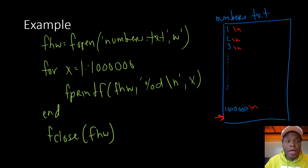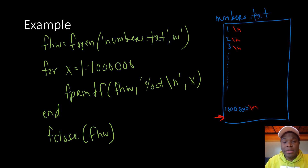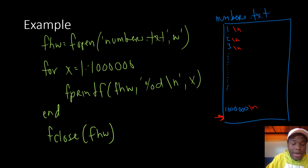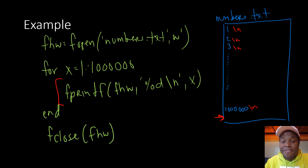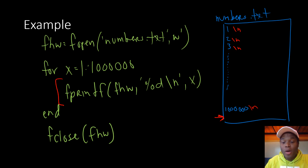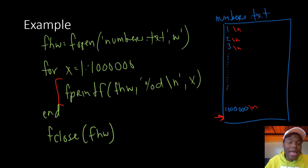A lot of times that extra blank line might not be a problem, but what if we only want exactly a million lines? All previous lines should have \n except the last one. We can handle this with an if statement inside the loop: if x is not 1,000,000, call fprintf with \n; but if x equals 1,000,000, call fprintf without \n. After running this code, we have a new text file with all numbers from 1 to 1,000,000.